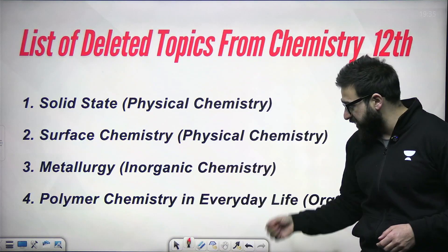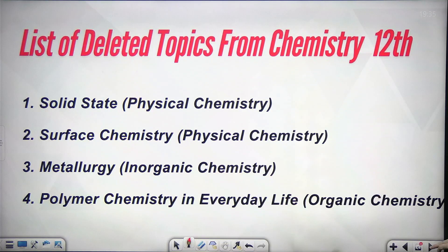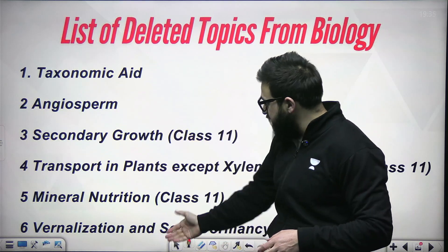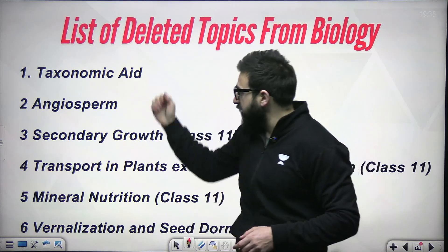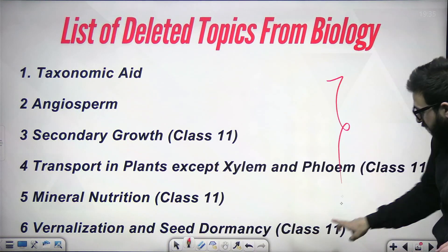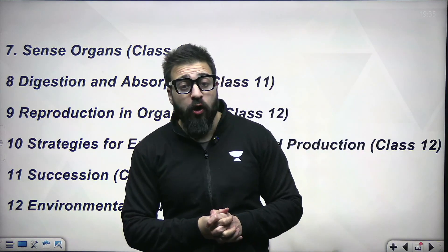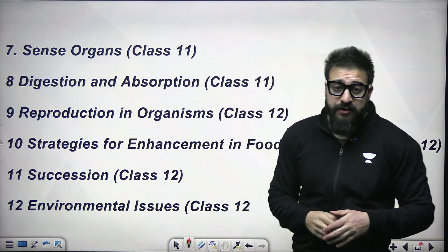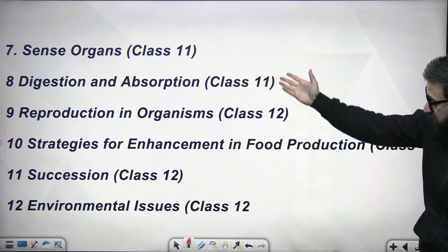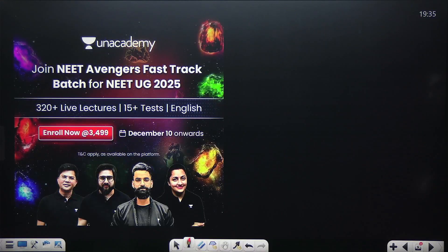You can see exactly over here — taxonomic aids, angiosperm, secondary growth — you can take a screenshot of this. From class 11th you can see these topics, and from class 12 these are the topics deleted from the syllabus. Please do like this video and share it with all serious NEET aspirants who have the aim to crack this examination in 2025.